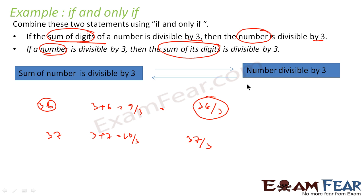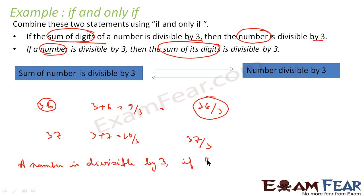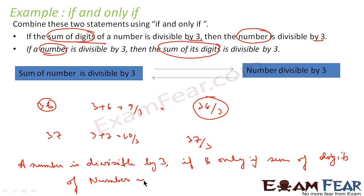The number is divisible by 3, and we can sure-shot say that the sum is also divisible by 3. So it is a sure-shot condition — it is bidirectional. We can see that a number is divisible by 3 if and only if the sum of digits of the number is divisible by 3. So what we have done here is combined these two statements using 'if and only if,' which is what we were asked to do.